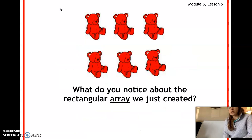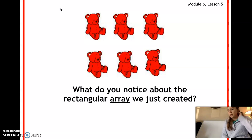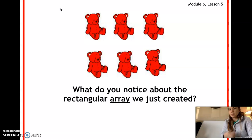Here is your answer — check that with yours. If you got that right, give yourself a nice kiss on the brain because you did awesome. Our question asks: what do you notice about the rectangular array we just created? Remember, this is our row going side to side, and these going up and down are going to be columns — we'll learn about that in a little bit.